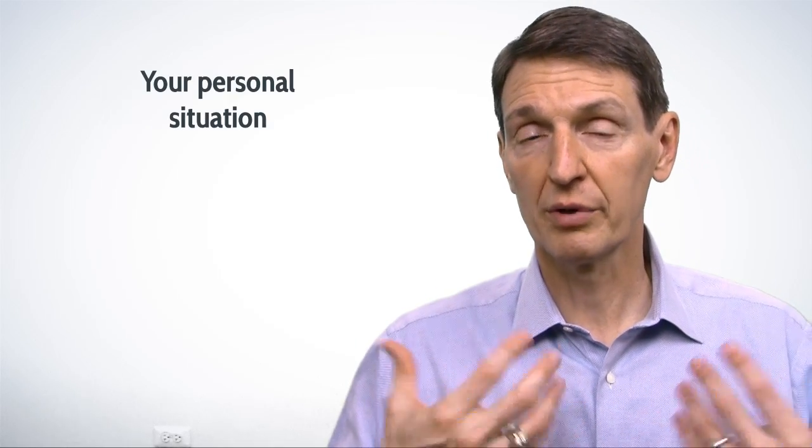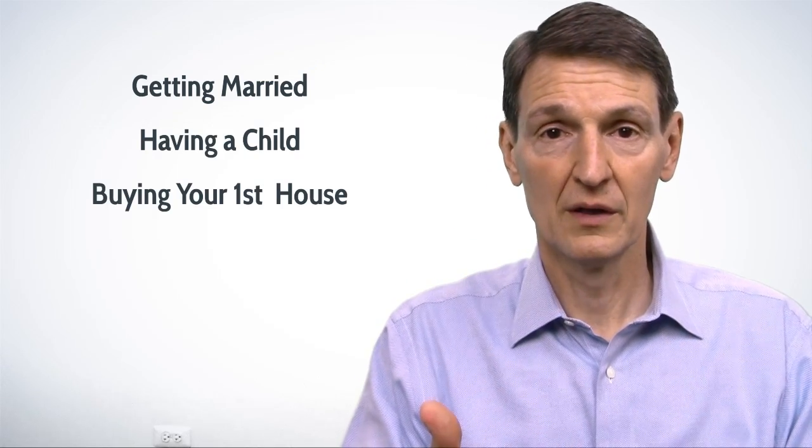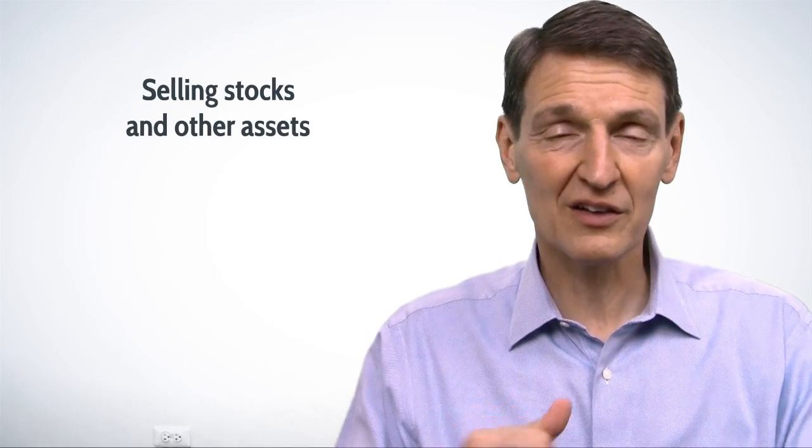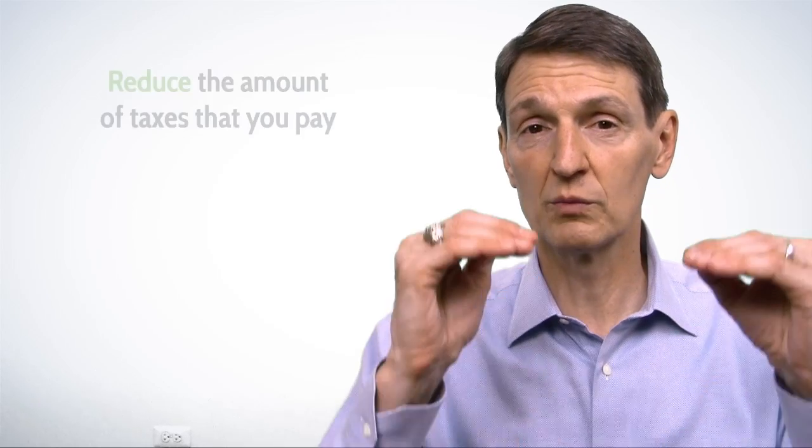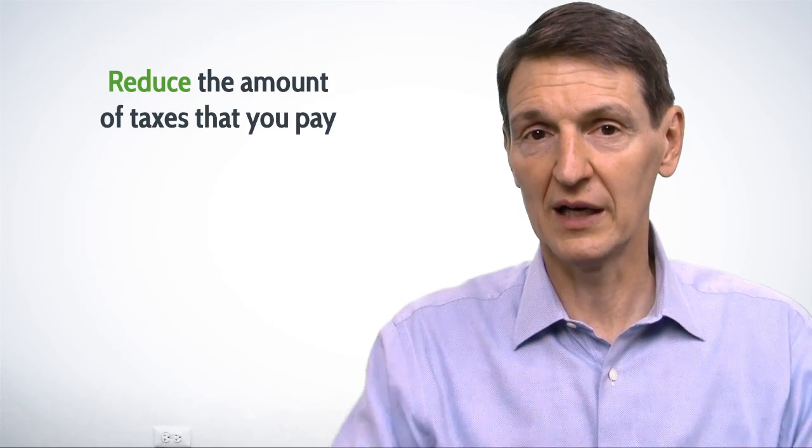The last area is really about your own personal situation. You could be getting married this year, maybe having a child, buying a house for the first time, or other things that take place like selling stocks and other assets that create gains where you can take advantage of various parts of the code as it relates to your particular circumstances so that you can reduce the amount of taxes that you pay.